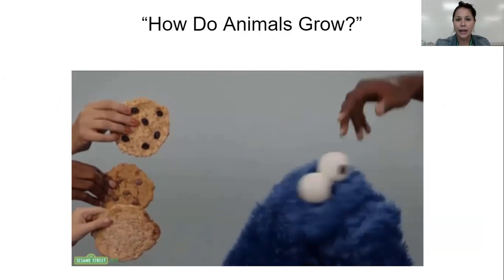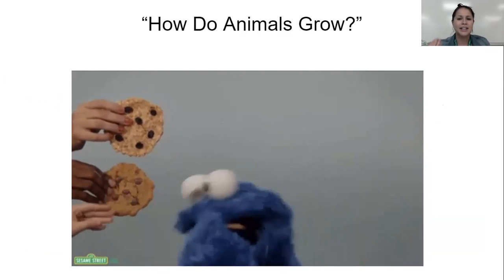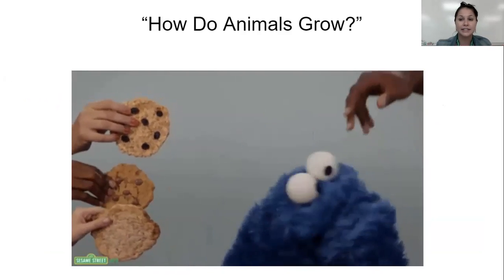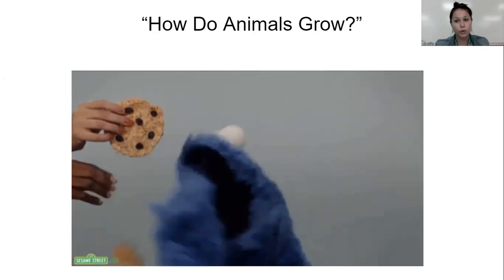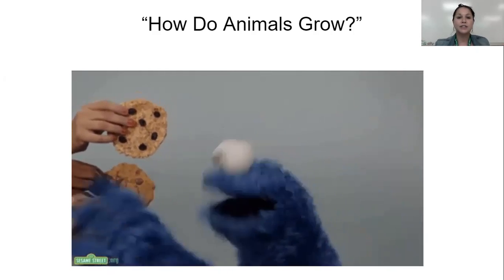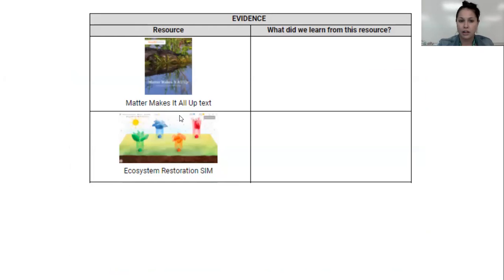Let's stop and think: how do animals grow? Think about Cookie Monster here — he's eating all these food molecules, all of these cookies. He's going to do two things with them after he breaks them down: use some to grow his body as body molecules, and use some as energy. When we're talking about claims and evidence, a claim is the answer to a question and evidence is how you know that. To build up our evidence toolbox today, we're going to talk about two things we've already looked at: the book Matter Makes It All Up and the Ecosystem Restoration Simulation. If you've been watching the videos, these two things should look familiar to you. If not, go back and watch some of the videos that you've missed.